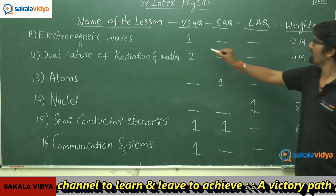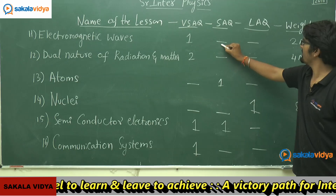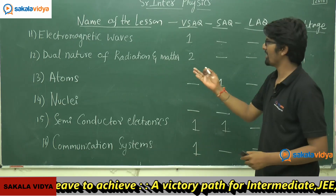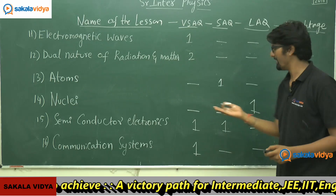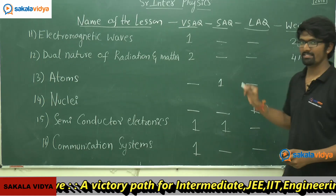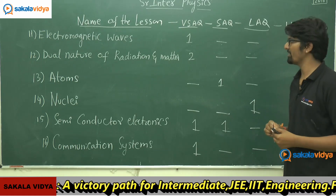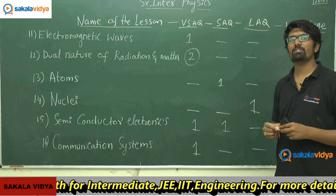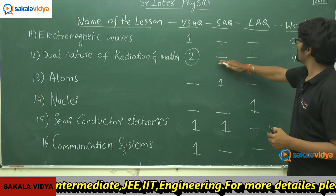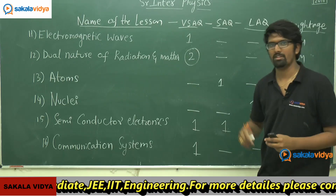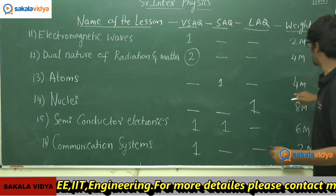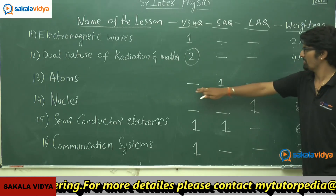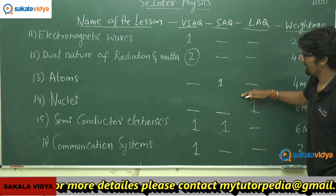The eleventh chapter, Electromagnetic Waves, has a weightage of 2 marks — one VSAQ, no SAQ, and no LAQ. The twelfth chapter, Dual Nature of Radiation and Matter, carries 4 marks and is very important for VSAQs — we are going to expect two VSAQs, no SAQ, and no LAQ. The thirteenth chapter, Atoms, has a weightage of 4 marks — one SAQ, no VSAQ, and no LAQ.